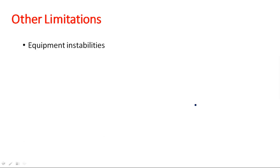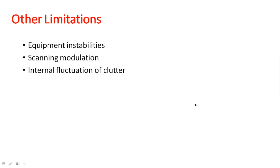On top of these, we can also see other limitations such as equipment instabilities — including transmitter and receiver instabilities — scanning modulations, and internal fluctuations of the clutter. These are the different parameters and factors that should be considered when working with MTI radars, because they all lead to limitations in MTI radar performance.